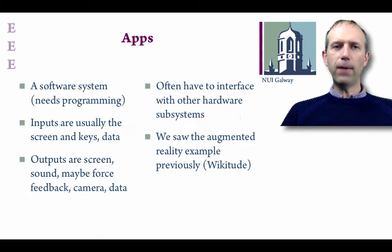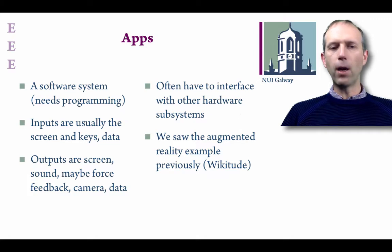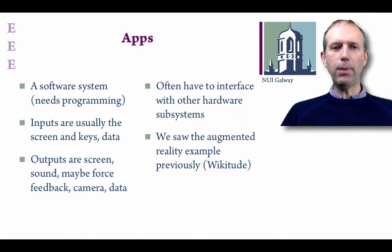We'll often have to have interfaces between different apps and all of the different hardware subsystems on our mobile phones. We saw earlier a nice example — the augmented reality example using the Wikitude application — which combines a whole bunch of different systems: taking input, providing output to the screen, interfacing with the GPS to know where you are, using the camera, and then overlaying some kind of visuals on top of a view of the outside world. So again, an app that's interfacing, taking inputs and outputs but also talking to many other types of hardware systems as well.